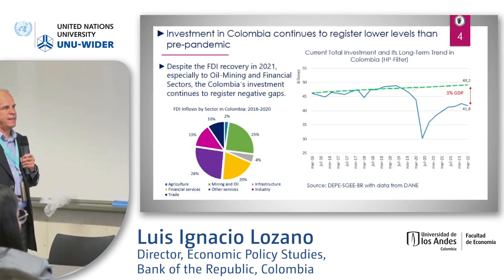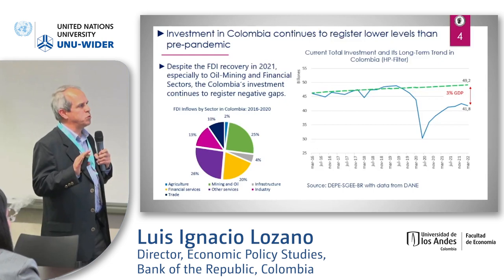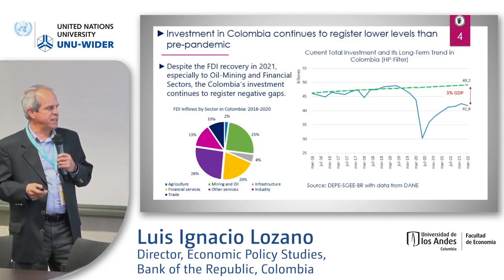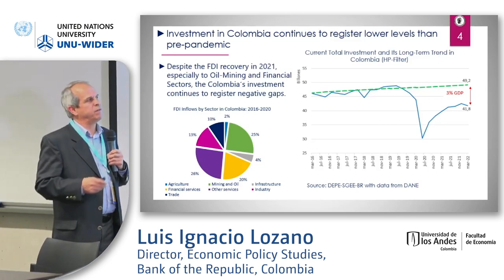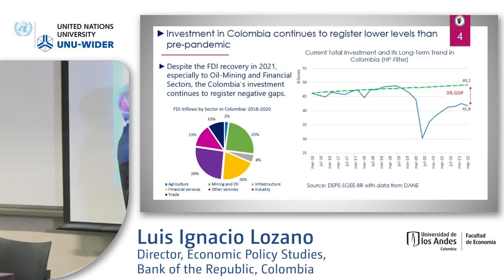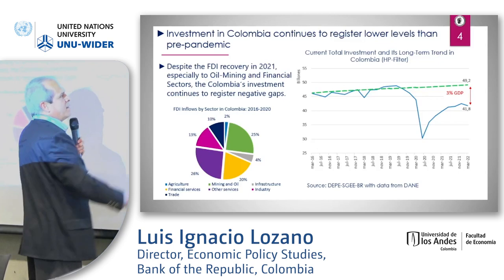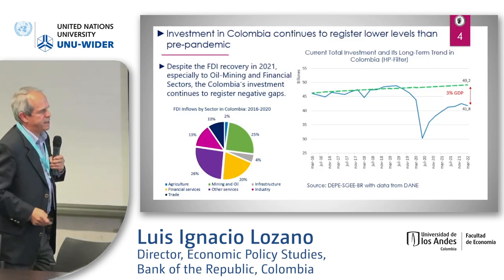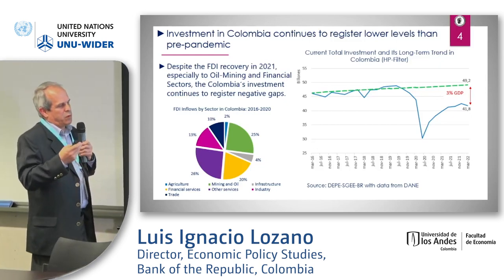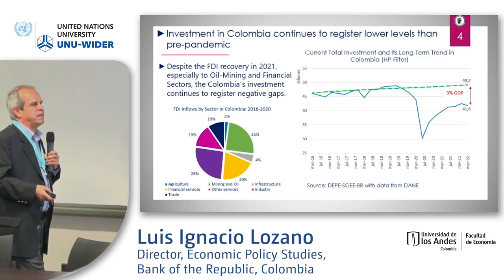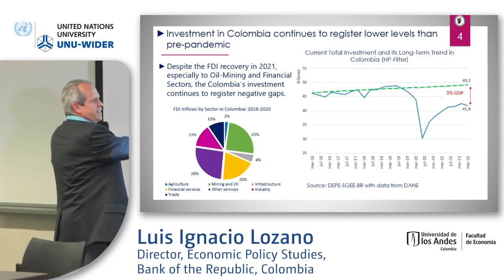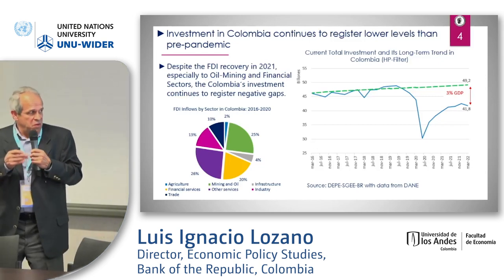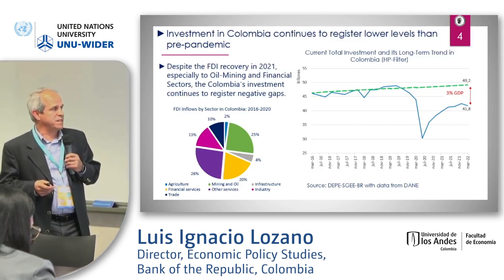In this slide for Colombia we present two things: on the left side we present the pie chart of foreign investment by sectors, and on the right side we present the observed figure of total investment in the country with respect to the long-run trend. As we can see in the pie, more or less 50% went to oil, mining, and financial services — these three sectors.